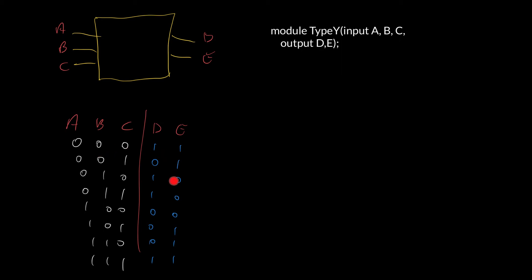In the olden days, we'd have to use sum of products form to try to work out an expression for D using logic gates and then do the same for E, work out a separate expression for E in terms of logic gates and implement the circuit that way. For greater efficiencies, you might use something like a Karnaugh map, which we're not considering in this course.